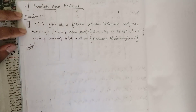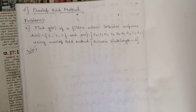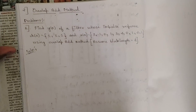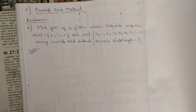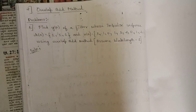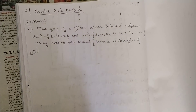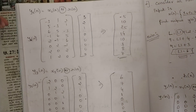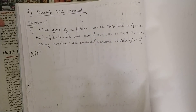Hello everyone, welcome to this new video. In the previous videos we discussed the overlap-save method and solved two different problems. In this session we are going to discuss a new method called the overlap-add method. The problems are even simpler. One common thing about these two methods: if the question is the same, the final answer y(n) would be the same — only the method changes.